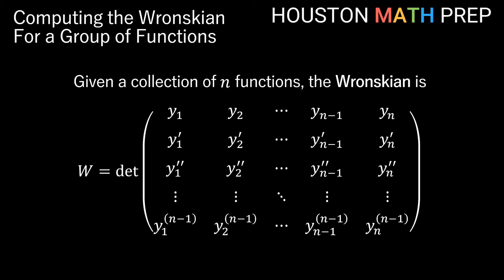Welcome back everyone. Houston Math Prep here on how to compute the Wronskian for a group of functions. So if we have a collection of n functions, the Wronskian is actually the determinant of a square matrix that includes a first row of all of the functions that you originally started with.